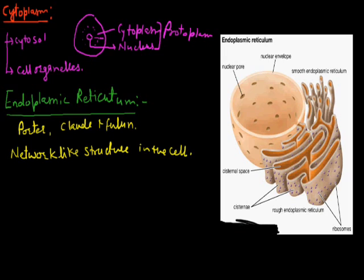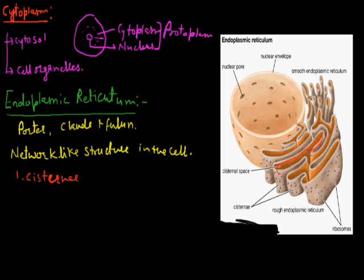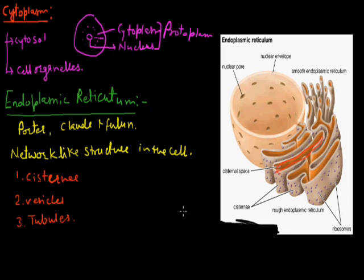So what is the endoplasmic reticulum? This structure has three components. First, cisternae — cisternae are the flattened tubules, flattened tube-like structures. Another structure we call them vesicles. And the third one is known as tubules. These three structures are formed in the endoplasmic reticulum, which is present between the nucleus and the cell membrane.